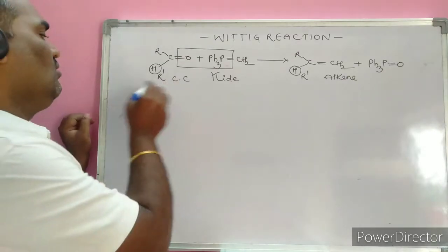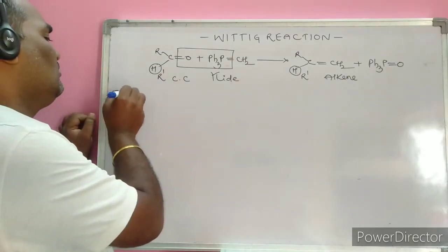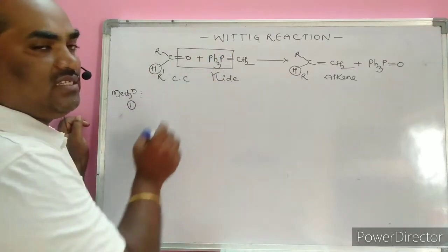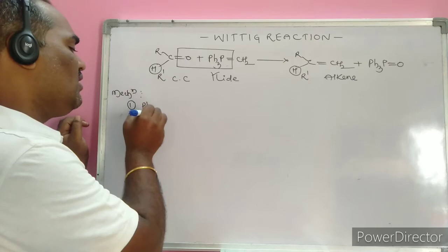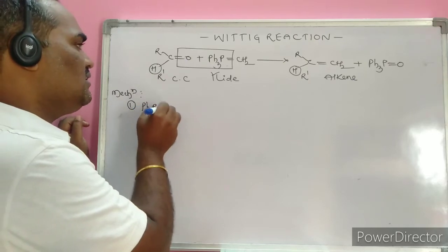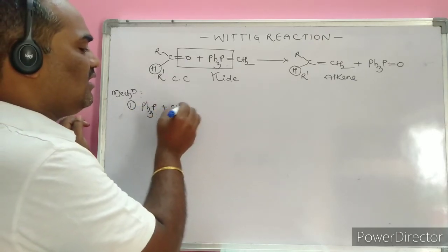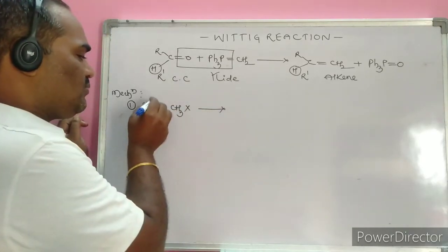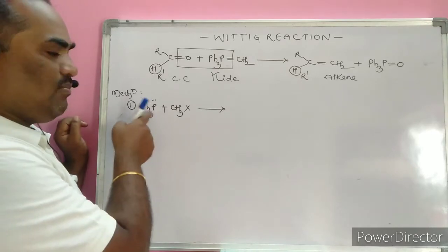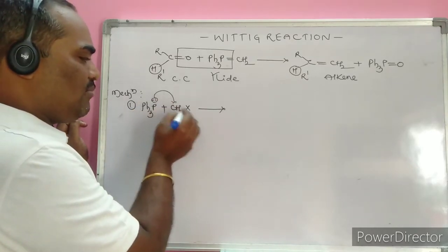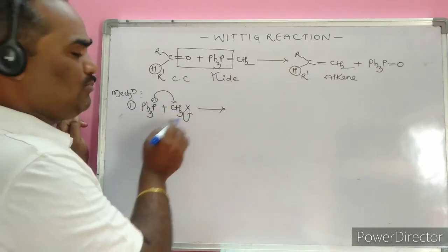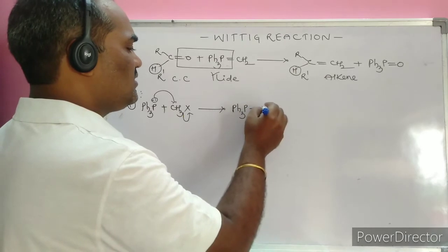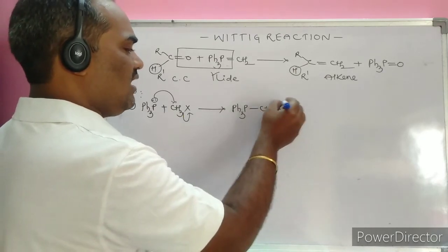Now for the mechanism. Step one is the formation of the ylide. Triphenylphosphorus reacts with an alkyl halide — let us take methyl halide. Phosphorus, being a group 15 element, contains a lone pair of electrons and forms a bond with the carbon. As a result, this bond is polarized, giving Ph₃P⁺–CH₃ with X⁻.